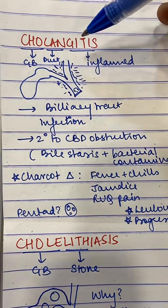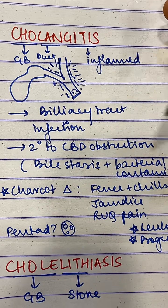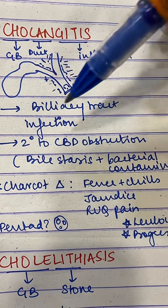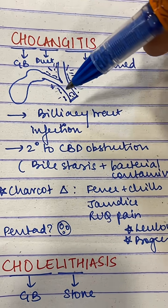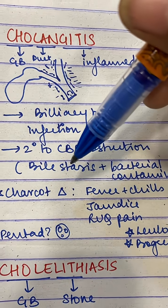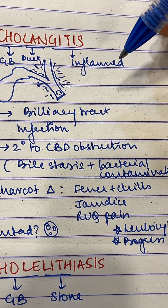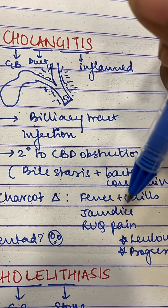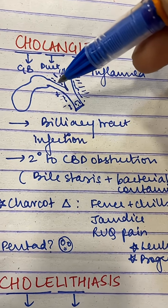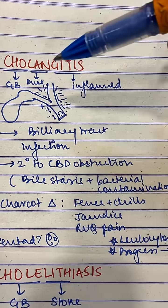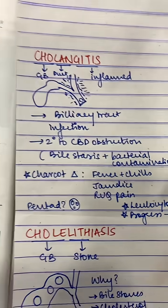When this obstruction causes inflammation of the biliary tract, that brings us to cholangitis — inflammation of the gallbladder duct. It's a tract infection, secondary to CBD obstruction, due to bile stasis and bacterial contamination. Here you will see Charcot's triad: fever with chills due to infection, jaundice due to obstruction, and right upper quadrant pain due to obstruction and distension. Reynaud's pentad adds leukocytosis and progression to sepsis.